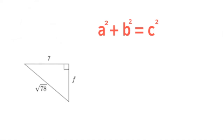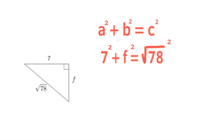Part b: we'll use the Pythagorean theorem again. Substitute a squared with 7 squared, b squared is the missing leg f squared, and c squared with the square root of 78 squared. 7 squared is 49, and the square root of 78 squared is 78. So the equation reads 49 plus f squared equals 78.